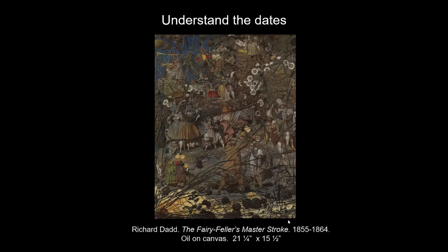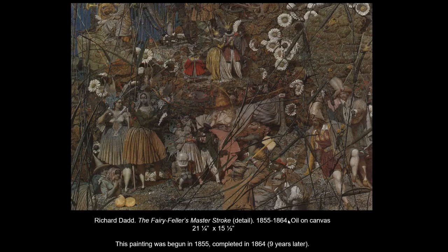The artist is Richard Dadd, and the title is The Fairy Feller's Master-Stroke. It's an oil painting, 21 inches high by 15 inches wide — actually very small for a painting — and yes, this man spent nine years working on it, begun in 1855 and completed in 1864. The subject is kind of complicated: a garden with a bunch of little fairies dancing and reveling. It becomes really interesting when you think of someone spending nine years on this obsessive amount of detail. If you look it up, you learn the artist painted this while being treated for mental illness in an asylum. This is why you should always read the label.